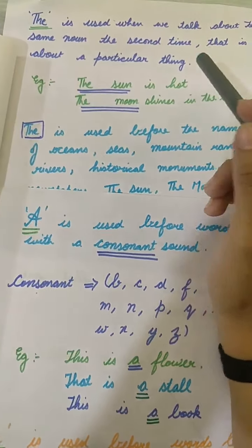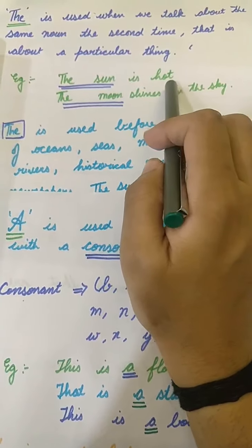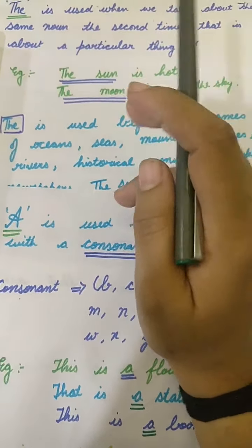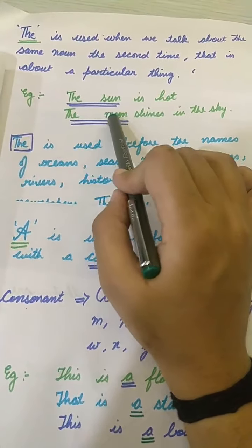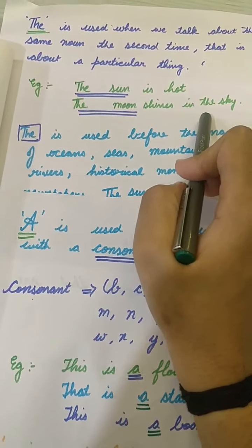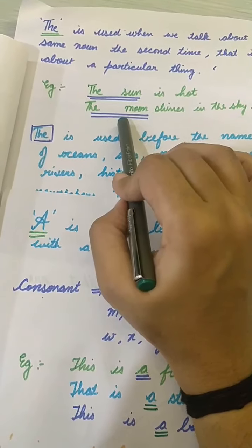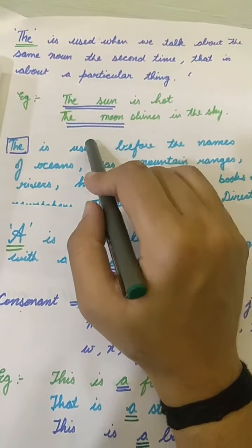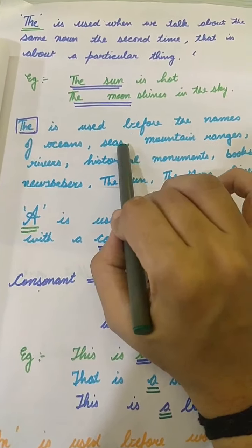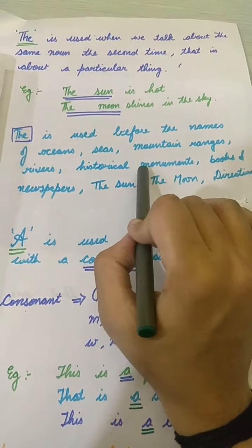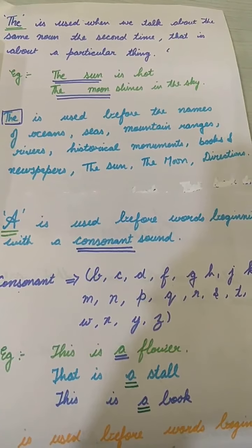For example: 'The sun is hot.' Do you know about the sun? Sun is one and you know this thing, you have seen it yourself — so with this we use THE. 'The moon shines in the sky.' You see the moon regularly, daily — so it is clear THE is used with a specific thing we are sure about. THE is used before the names of oceans, seas, mountain ranges, rivers, historical monuments, books, newspapers, and directions.